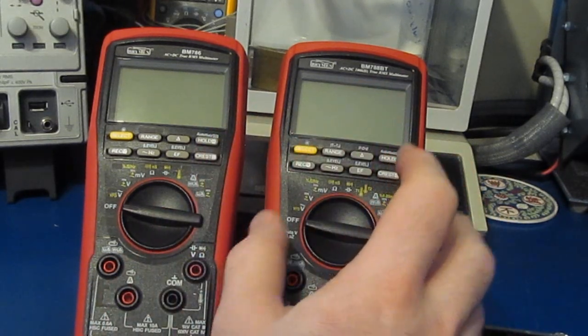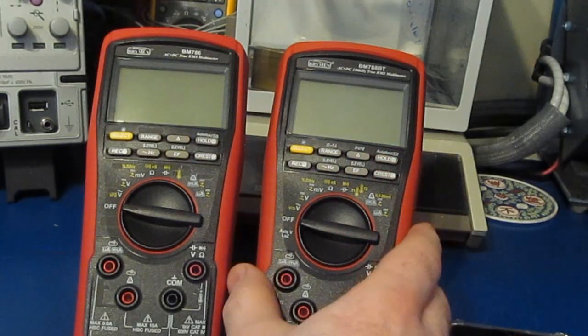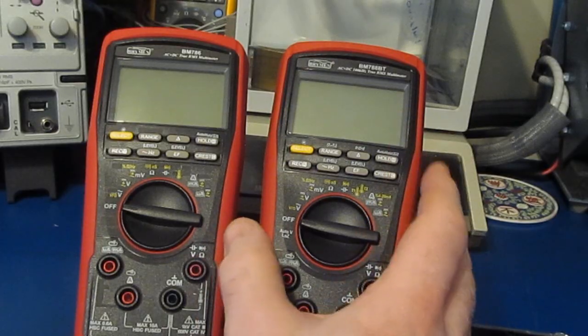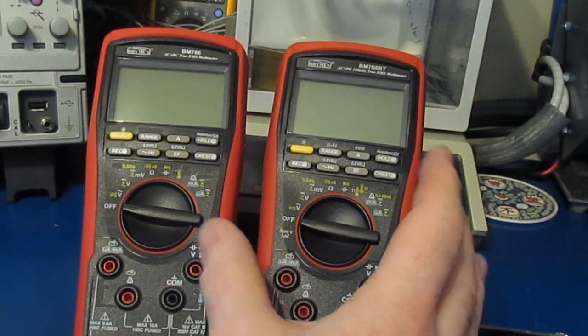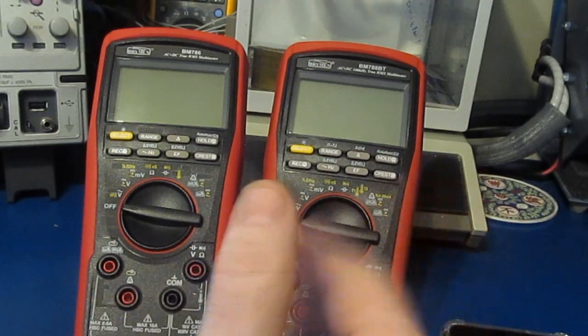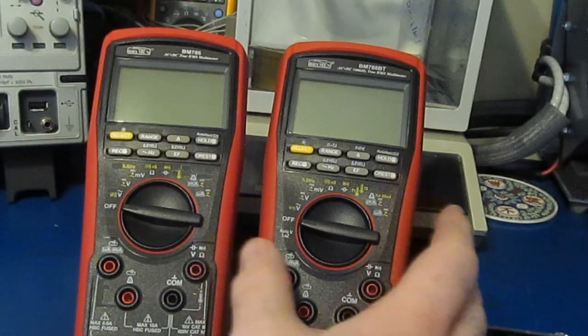So I tried to reprogram the firmware from the Brymen BM 787 into the Brymen BM 788BT. Brymen had supplied me with that firmware for my own testing. If you watch this channel, you know I have an arrangement with them where they've been supplying me prototype parts for a while. I want to be clear that this isn't something Brymen would supply to a casual user.